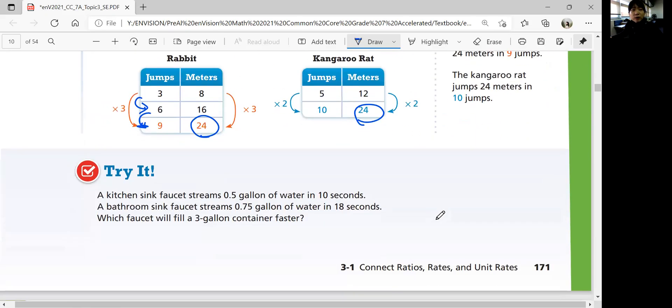Let's look at this try question. A kitchen sink faucet streams 0.5 gallons of water in 10 seconds. That is your rate. And the bathroom sink faucet streams 0.575 gallons of water in 18 seconds.